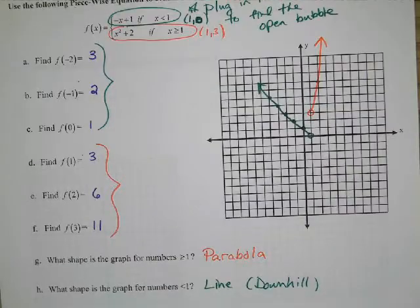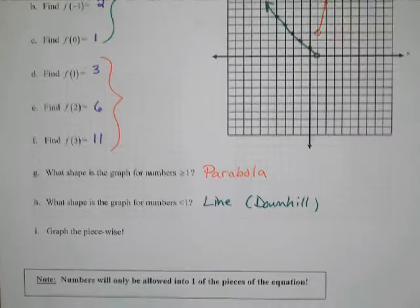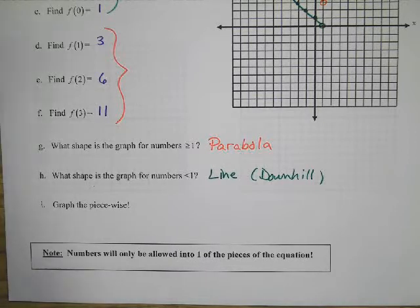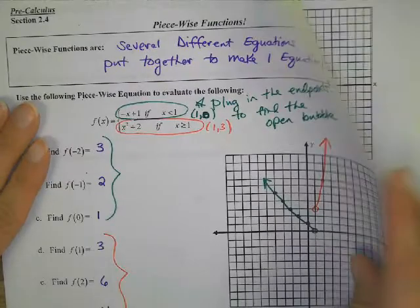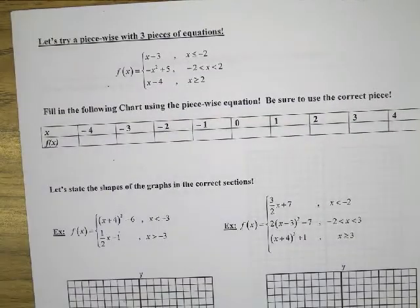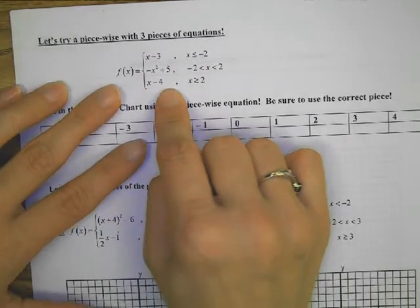Numbers are only allowed in one piece of the equation. You can't put a number into both sections of the equation. Here is an equation with three pieces. We've got three pieces of an equation: f of x equals piece 1, piece 2, piece 3.